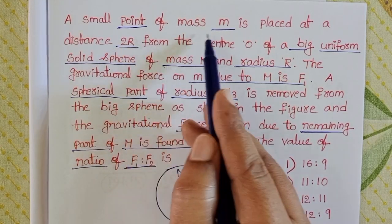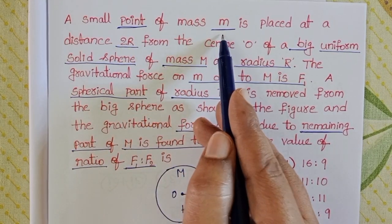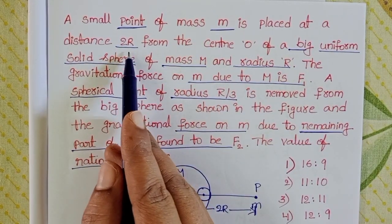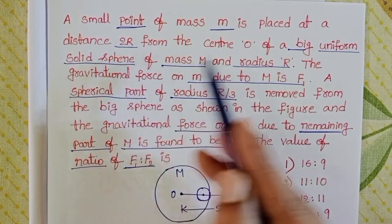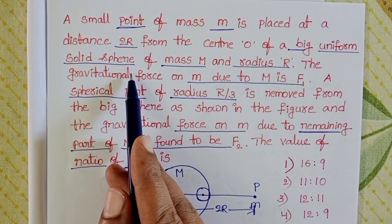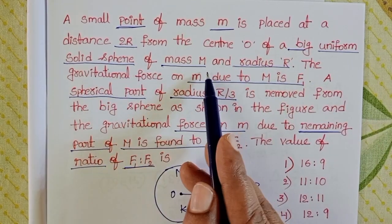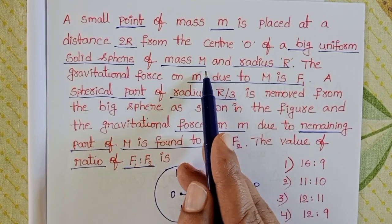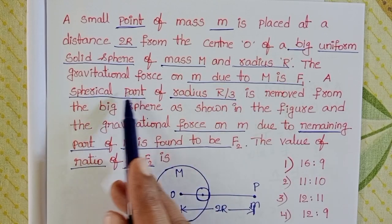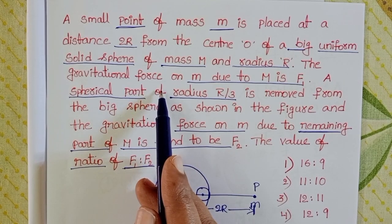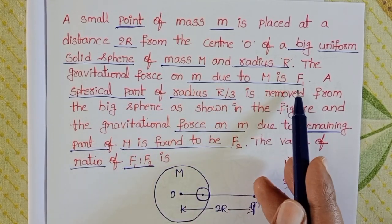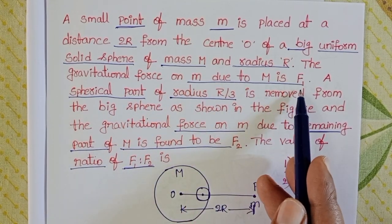A small point of mass m is placed at a distance 2R from the center O of a big uniform solid sphere of mass M and radius R. The gravitational force on m due to M is F1.